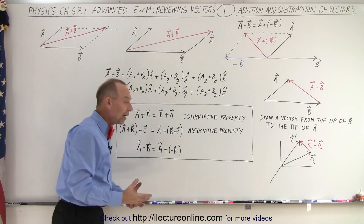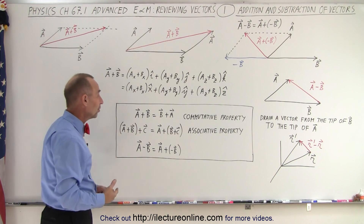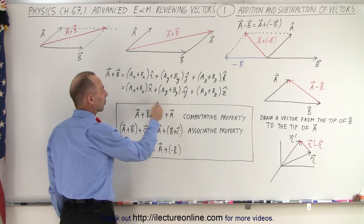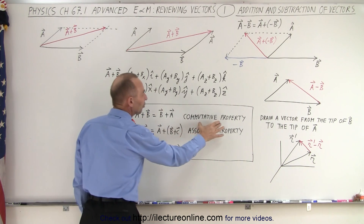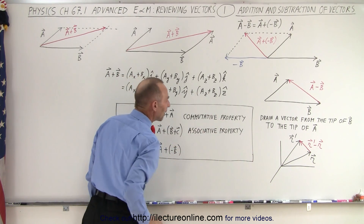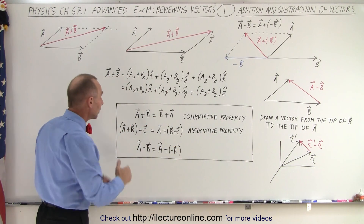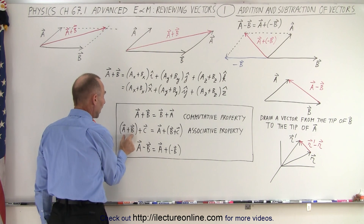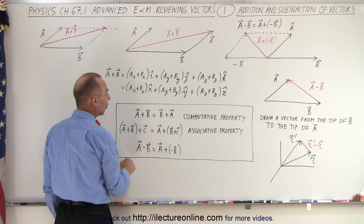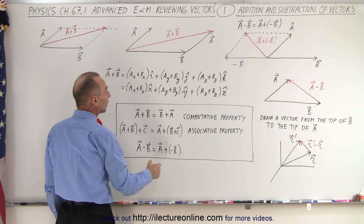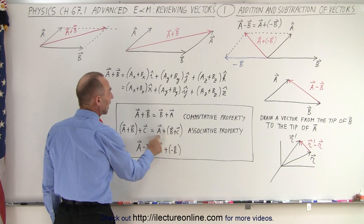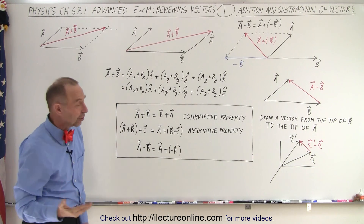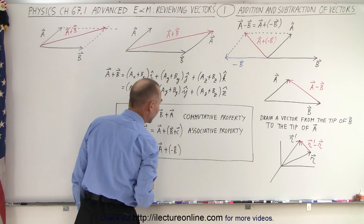Summarizing some properties of vector addition: A plus B is the same as B plus A — vector addition follows the commutative property. Also, we can group them in separate groups: we can group A plus B together and add those first, then add C, or add B plus C first and then add A, and we end up with the exact same result. In other words, vector addition has the associative property.